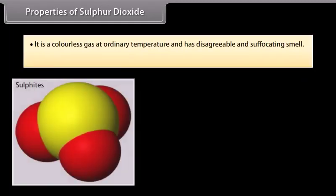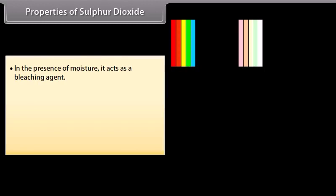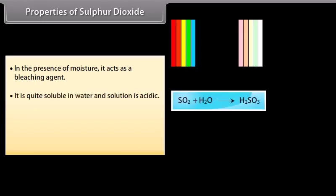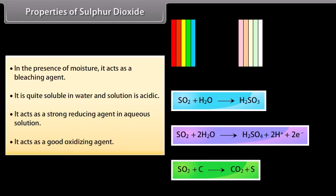Properties of sulphur dioxide. It is a colourless gas at ordinary temperature and has disagreeable and suffocating smell. It reacts with alkalies forming sulphites and bisulphites. In the presence of moisture, it acts as a bleaching agent. It is quite soluble in water and solution is acidic. It acts as a strong reducing agent in aqueous solution. It acts as a good oxidising agent. For example, at 1000 degrees Celsius, it oxidises carbon into CO2.